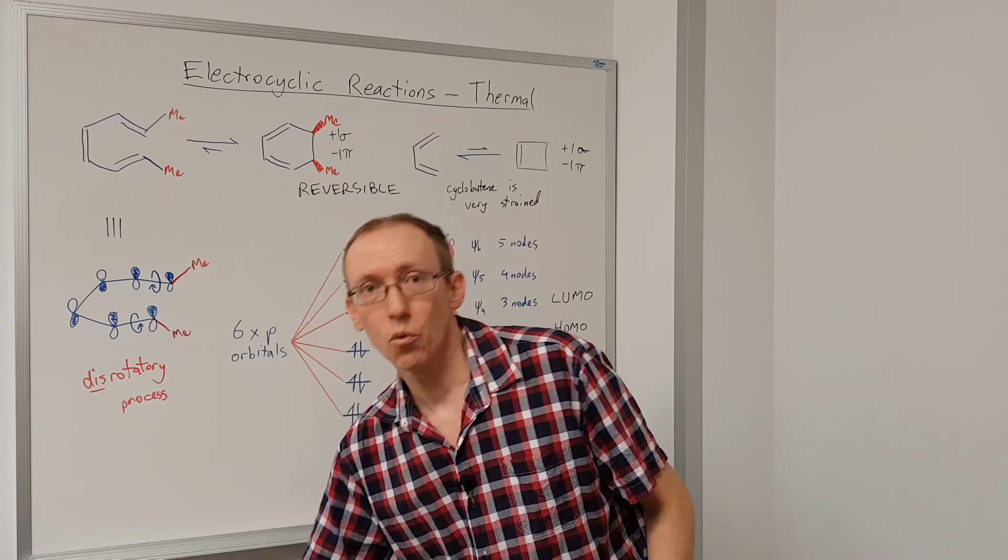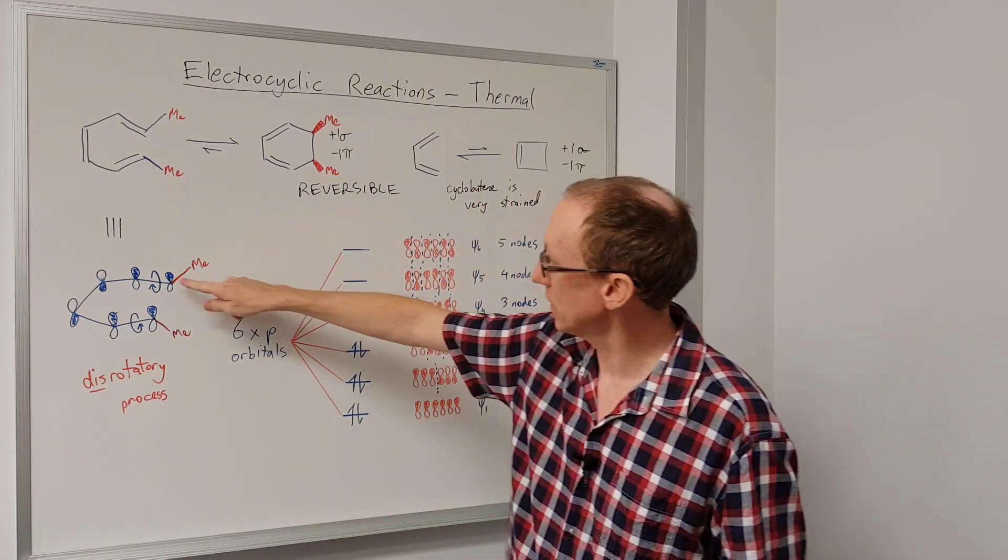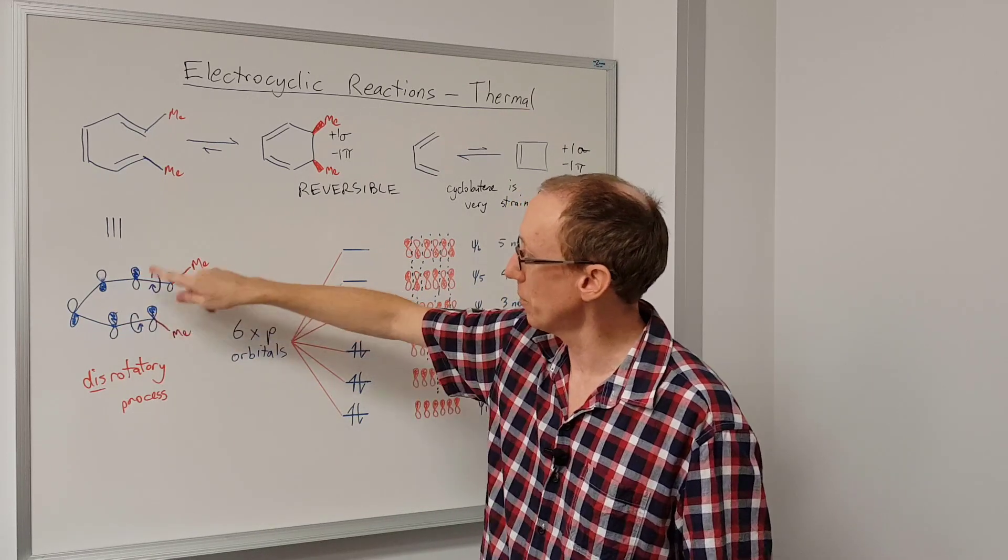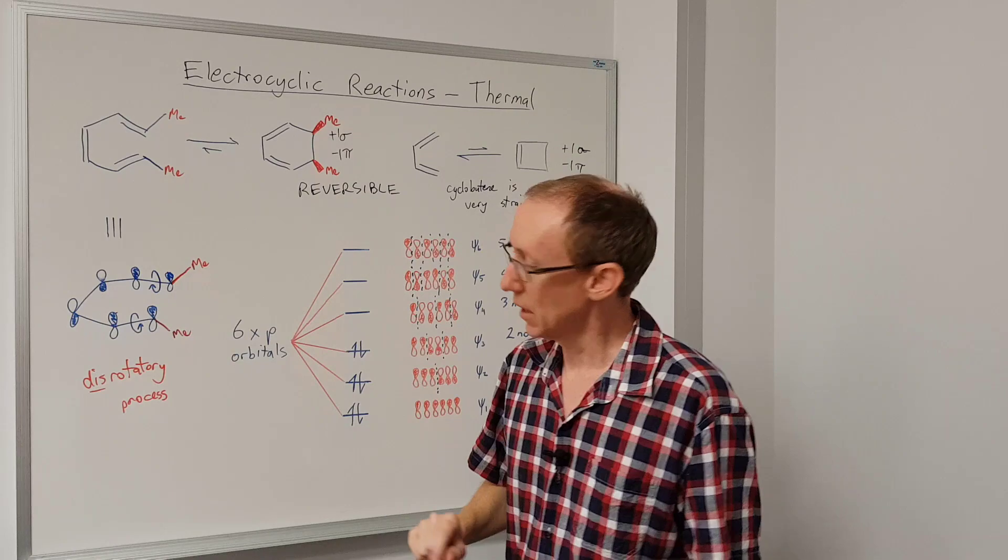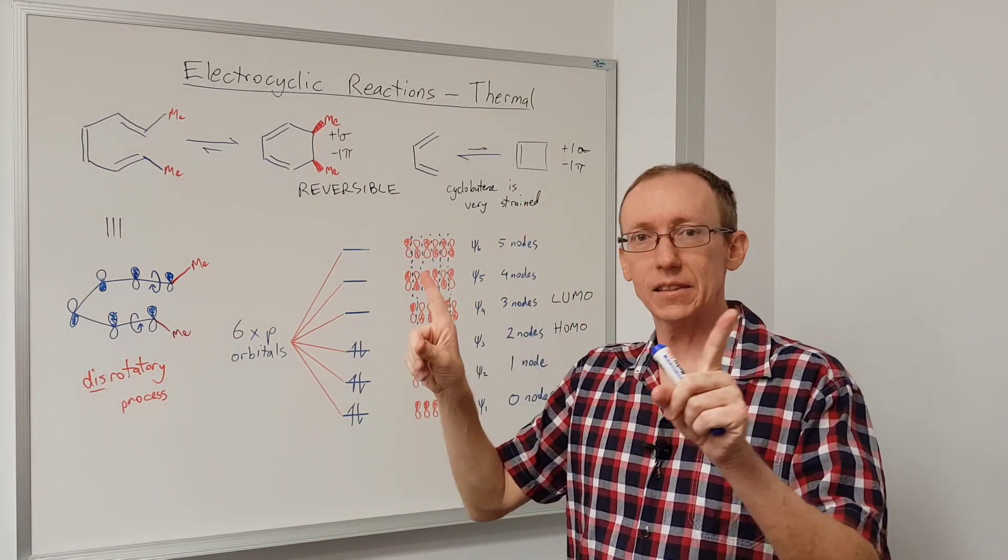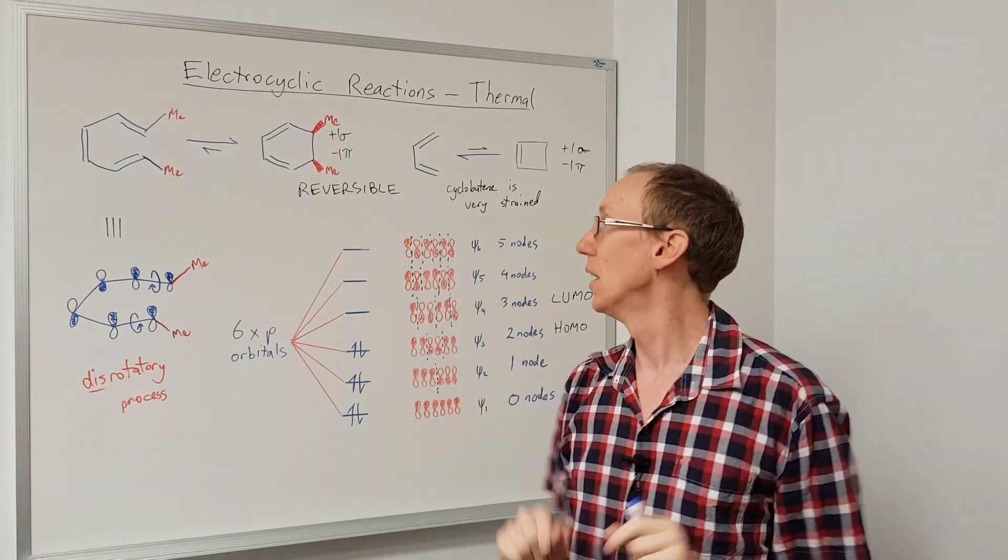And the reason why that happens is that we have this particular arrangement of the phases on the HOMO. We've got phases such that to get them to overlap, they have to rotate in a disrotatory manner. Now, we won't go through it in this video, but you can go through the same system to look at any electrocyclic process.